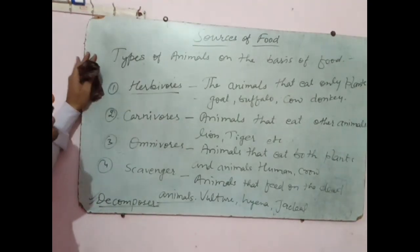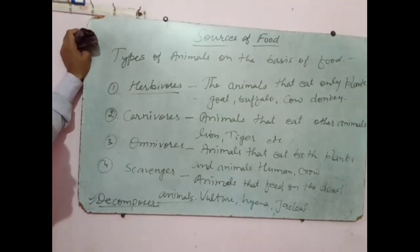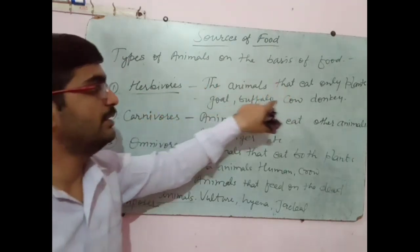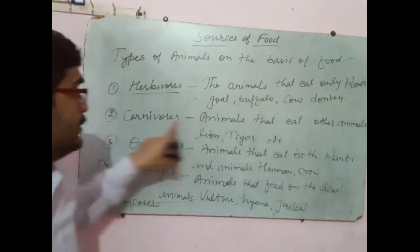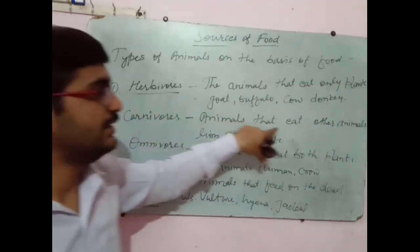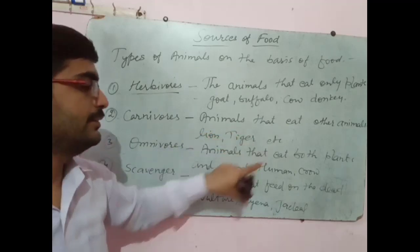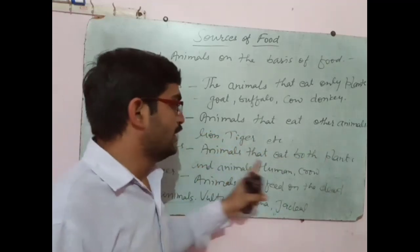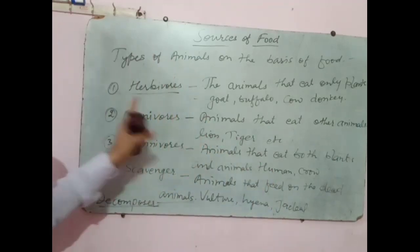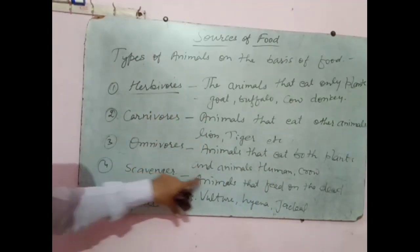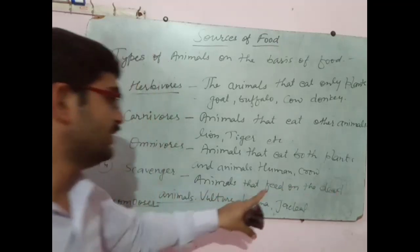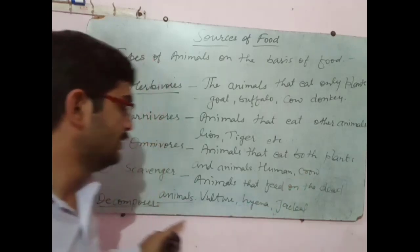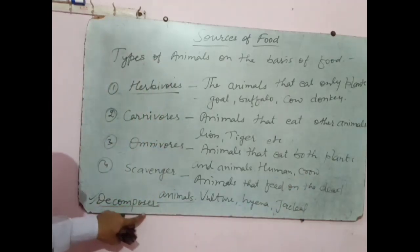So these are the types of animals on the basis of the food they eat. First is herbivores, that eat only plants — like goat, buffalo, cow, and donkey. Second is carnivores, the animals that eat other animals — like lion, tiger. Omnivores eat both plants and animals. The animals that feed only on dead and decaying animals — like vulture, hyena, jackal — are scavengers.